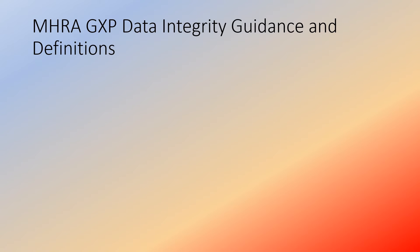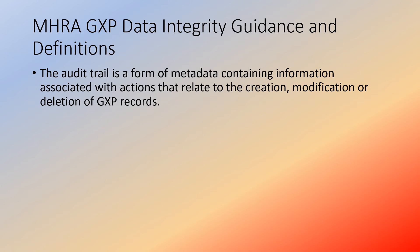Let us understand the prescription of the MHRA GxP Data Integrity Guidance and Definitions. The audit trail is a form of metadata containing information associated with actions that relate to creation, modification, or deletion of GxP records. The MHRA GxP Data Integrity Guidance and Definitions, Revision 1, March 2018, defines it as given here. We know that metadata is the data that describes the context of the main data — that means who did the activity, what was done, when was it done, and why was it done.